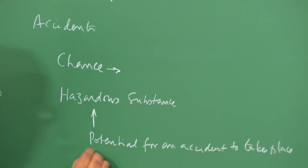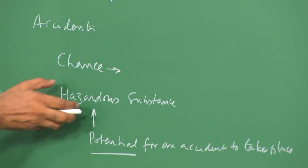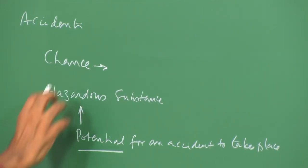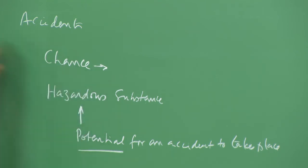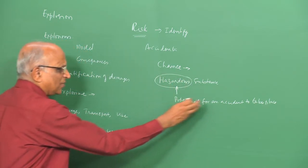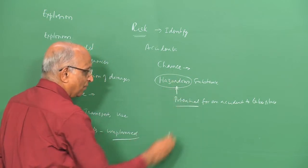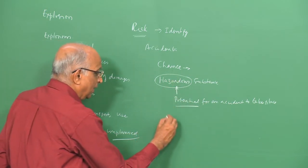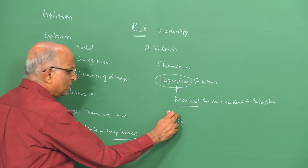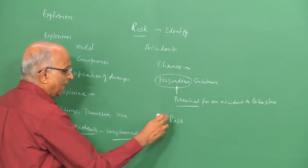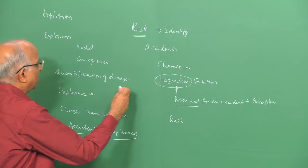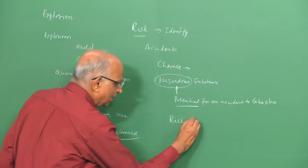We need to reduce the potential for accidents. All substances like liquid fuels when being transported are labeled as hazardous substances. In case there is a spill, it could form an explosive substance. The potential for an accident is always there — that is the meaning of the word hazard. When we talk in terms of risk, the risk should be so small that the chances of an accident involving these explosives do not take place, and that is why we do risk analysis.